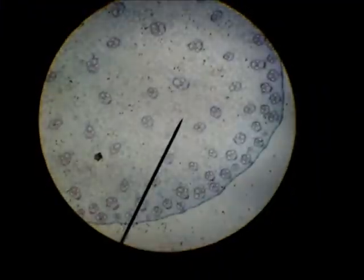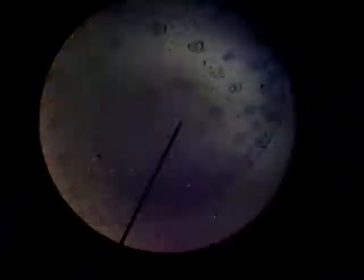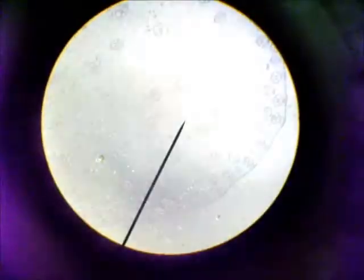This is a cross section of a stem of a monocot. In the monocot, the phloem and xylem are randomly scattered.